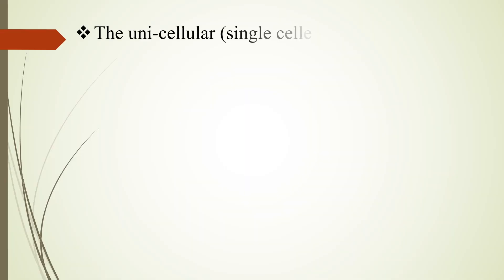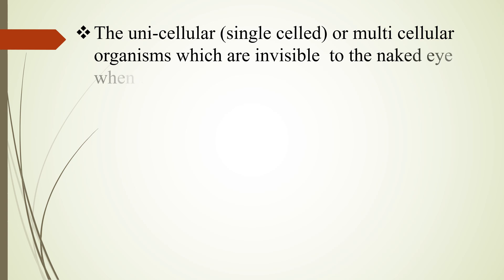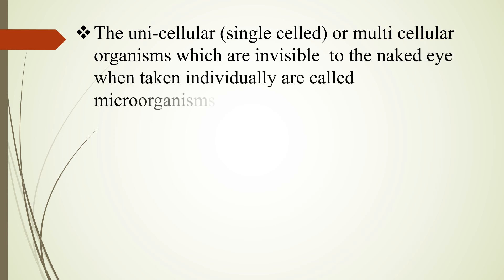First of all, we have to take an idea of who microorganisms are. The unicellular — that means single cell — or multicellular organisms which are invisible to the naked eye when taken individually are called microorganisms. Some microorganisms are composed of only one cell, and some are multicellular, meaning they are composed of two or more cells. We can't see them with our naked eye.